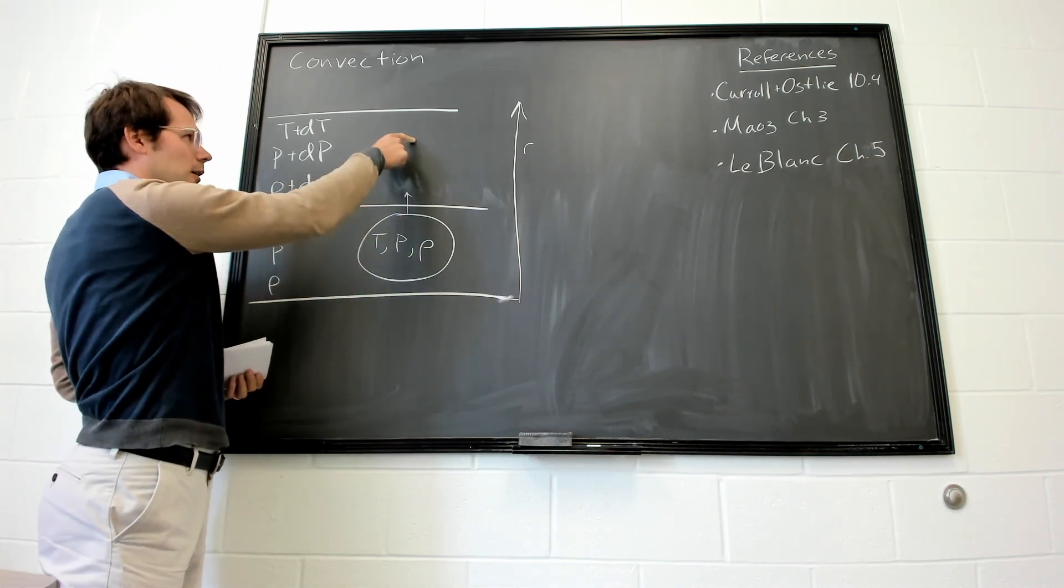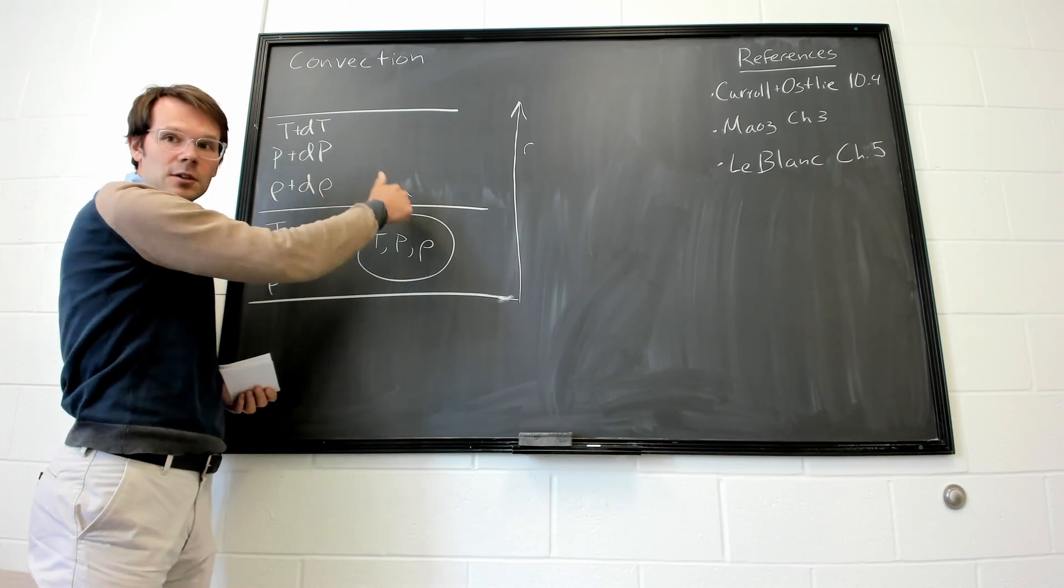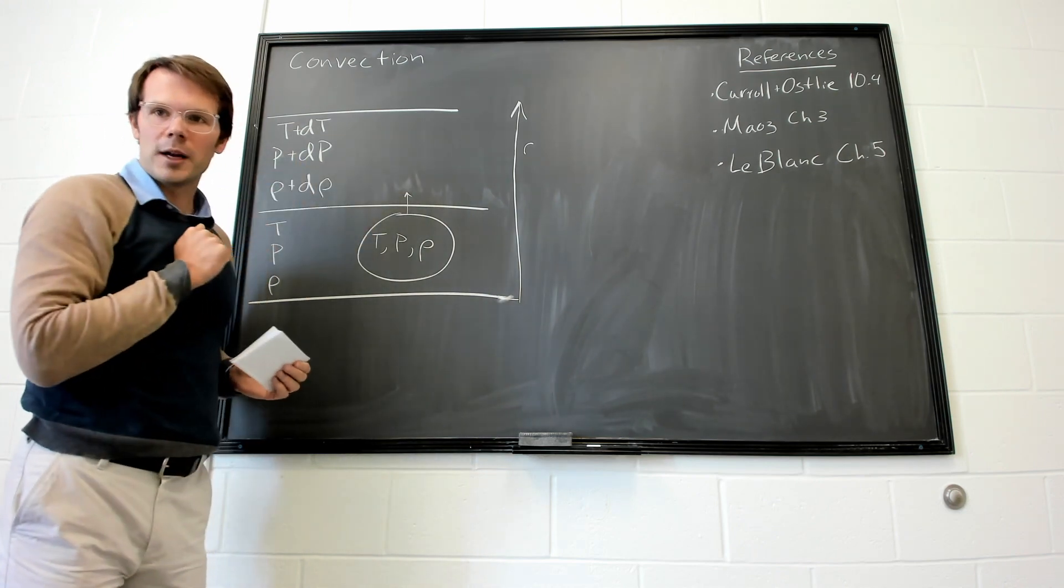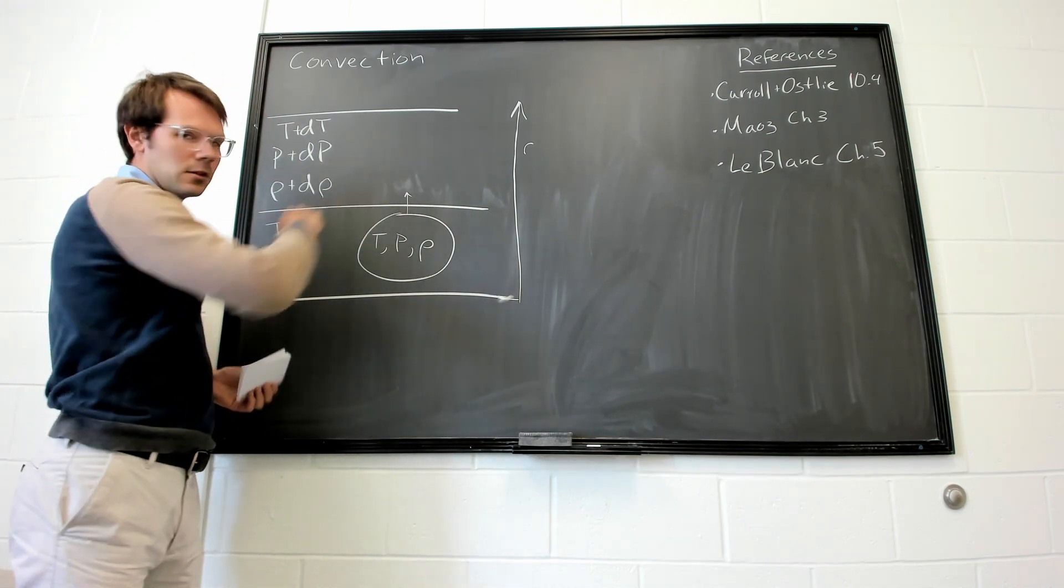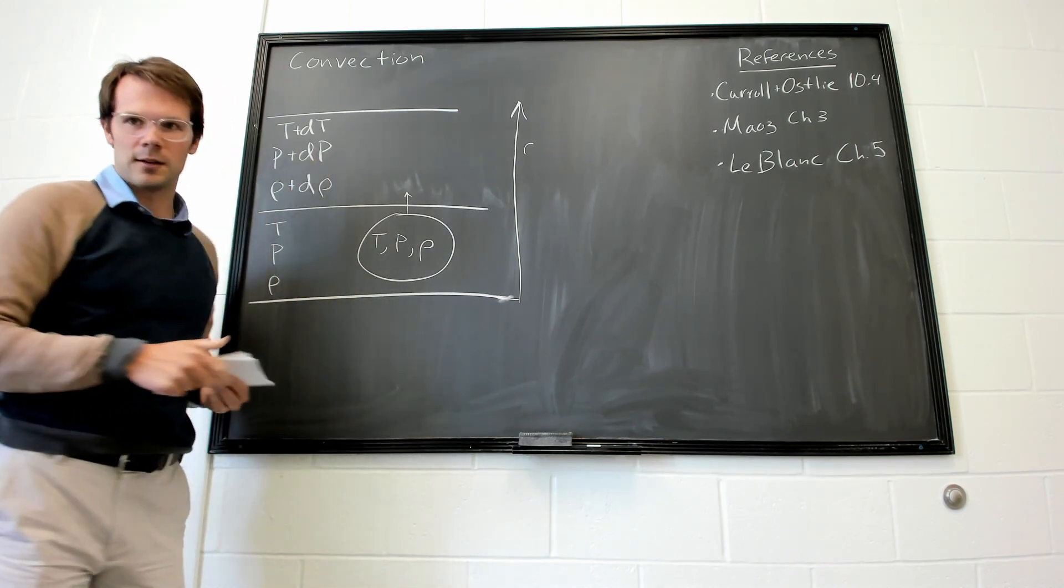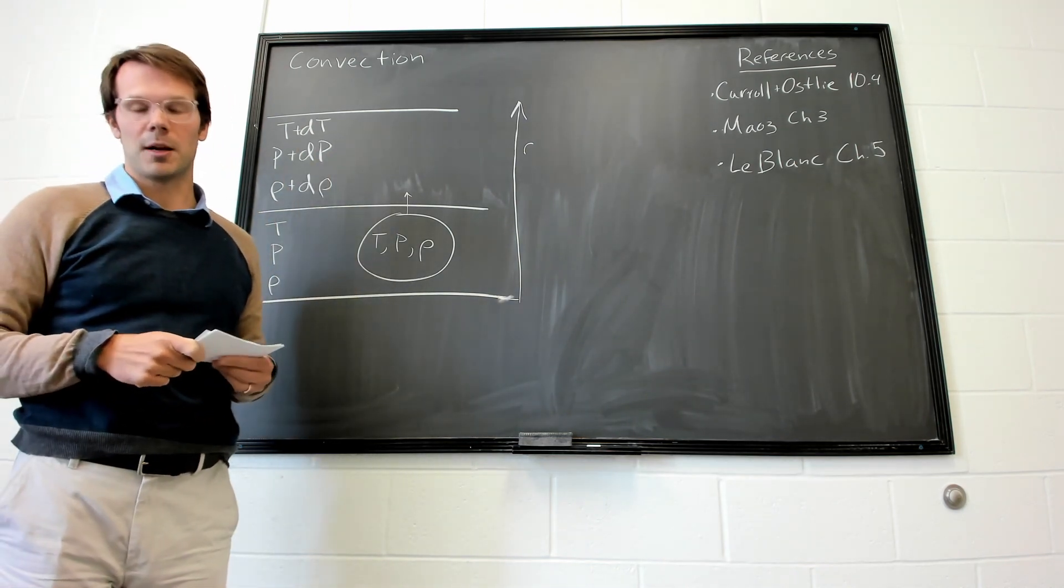If we move this cell into here, and we want to say that it's going to float, how do these properties need to relate? What about the cell needs to be different than the nearby medium?